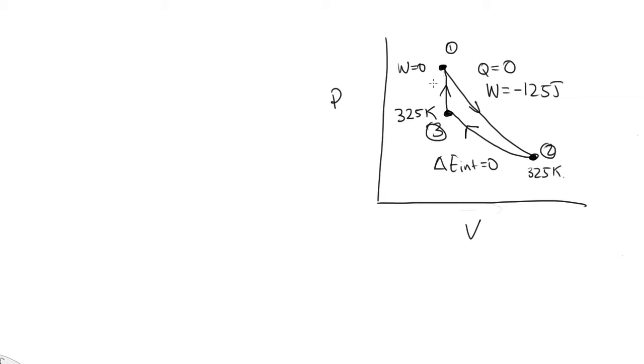Now part B says, what's the heat transfer in this step here? So going from 3 to 1. Well, to do that, we can work out what the change in internal energy is in this step. And we know that there's no work done. So all the change in internal energy must come about due to a heat transfer.